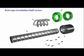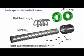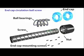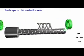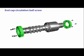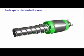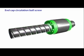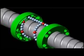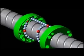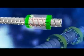End cap circulation ball screws are composed of a screw, nut, ball bearings, and end caps. The bearings remain between the screw and the nut, and the bearings return via a hole made through the end cap and the nut. Because this ball screw design causes the steel bearings to pass through the front and back sections of the nut, it is known as an end cap circulation ball screw.